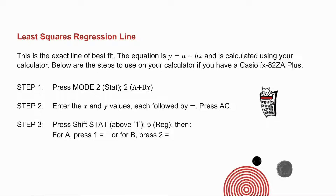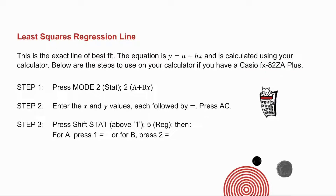The least squares regression line is the exact line of best fit. The equation for the least squares regression line is y equals a plus bx. Be very careful — it is a straight line, but we write it as y equals a plus bx, with the x term coming second. We calculate it using the calculator. If you have a Casio FX 82ZA+, press Mode 2, then 2. Enter the x and y values followed by equals, and then press AC.